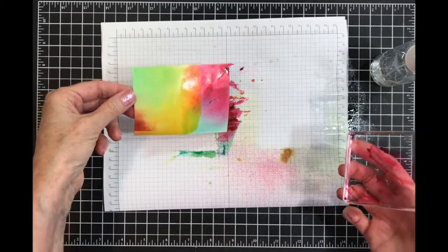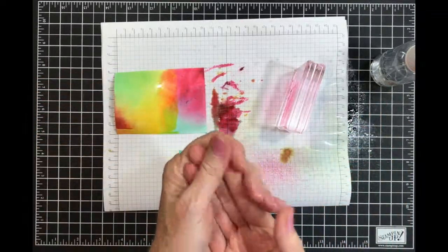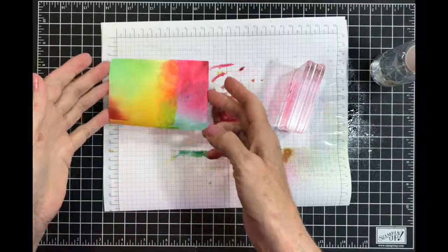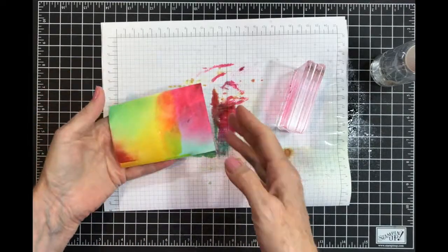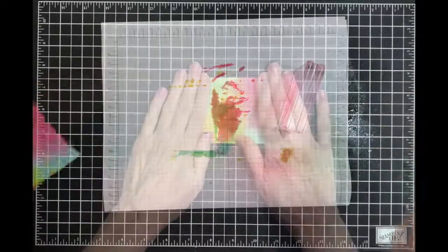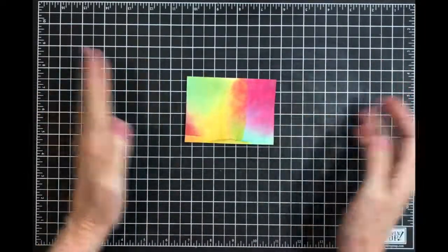I'm going to smear it that way. Now this has to dry, so I'm going to hit it with the heat tool and then I'll clean this up and be back. My cardstock is dry and my area is dry too.